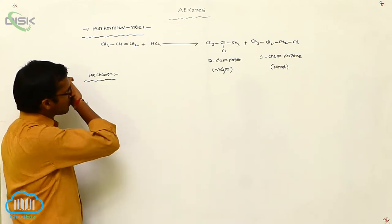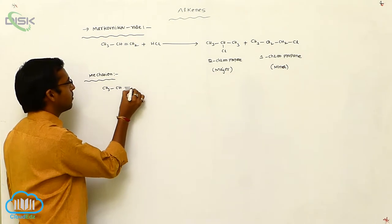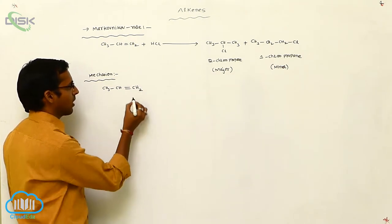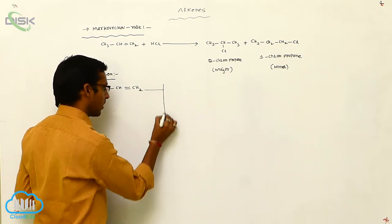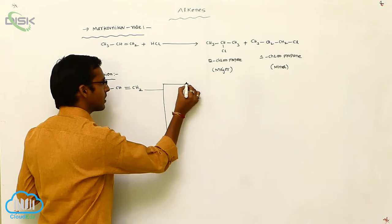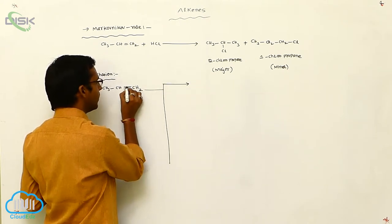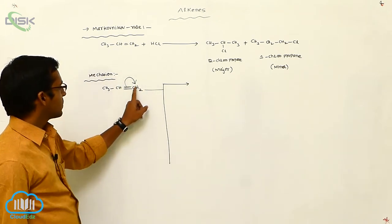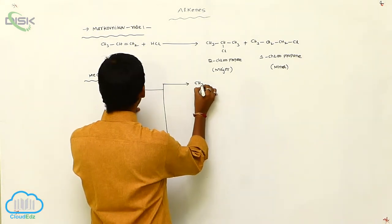Looking at CH3CH=CH2, there are two types of cleavages. In the first cleavage, this sigma bond is cleaved here. One carbon gets a negative charge and the other gets a positive charge.